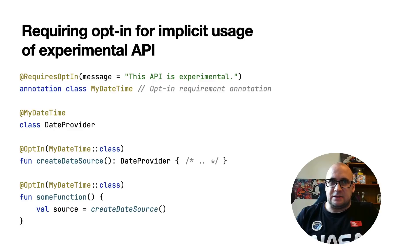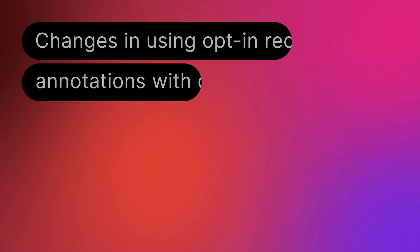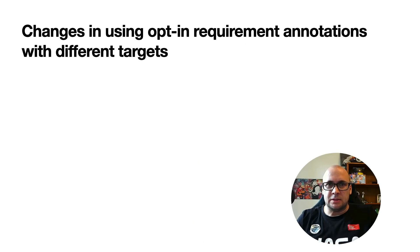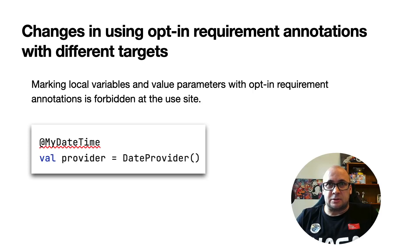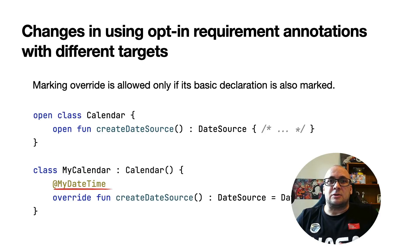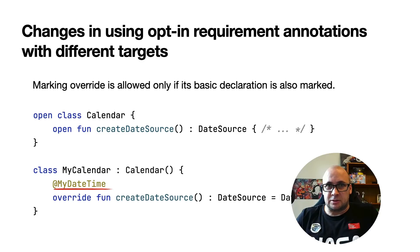In this example, we can see that the return type is marked as an experimental API element. Hence, the usage of the function requires you to opt-in even if the declaration is not marked as requiring opt-in explicitly. As part of the stabilization story for opt-in requirements, Kotlin 1.5.30 presents new rules for using and declaring opt-in requirement annotations on different targets. We are now limiting the number of cases where these requirement annotations could be used. For instance, marking local variables with opt-in requirement annotations is now forbidden at the use site. Also, marking an override is allowed only if the corresponding declaration in the supertype is also marked with the requirement annotation. You can find the full list of restrictions in the documentation.